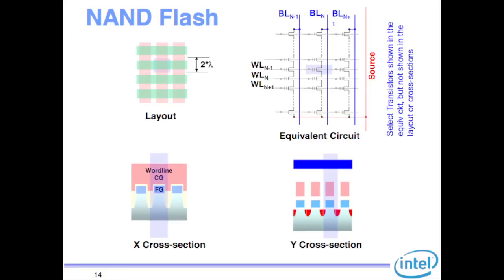The cross section of a flash array is as simple as it really gets: word lines and bit lines arranged in a checkerboard fashion. Bit lines run across the whole block, word lines run perpendicular, and you have a transistor at each cross point. In the word line direction, you have word line, source, word line, source repeated; in the bit line direction you have a floating gate wrapped by the word line.